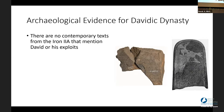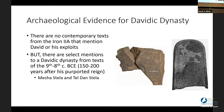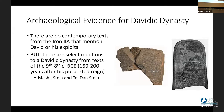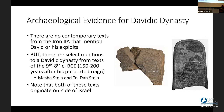We'll start with the bad news: there are no contemporary texts from the Iron 2A — from around the time David reigned — that mention David or his exploits. But we do have at least one and probably two texts from later periods that mention a Davidic dynasty: the Tel Dan Stele and the Mesha Stele. Coming from the 9th to 8th century, around 840 to 750 BC — some 150 to 200 years after David's reign — we still have mention of the Davidic dynasty, notably from outside Israel.